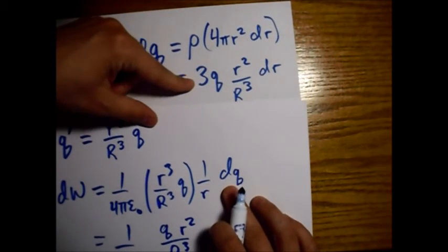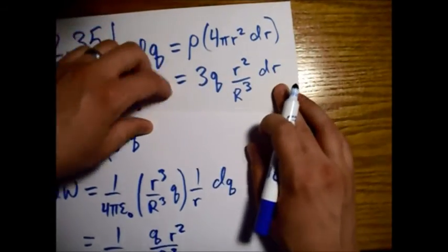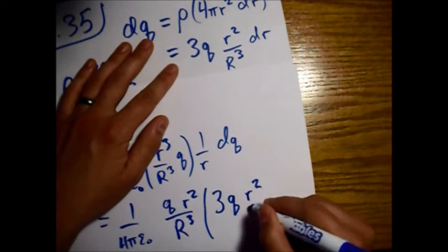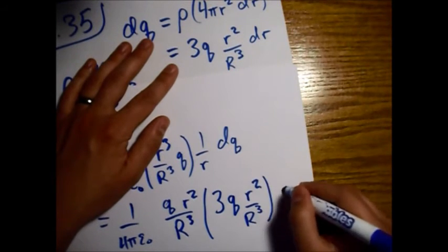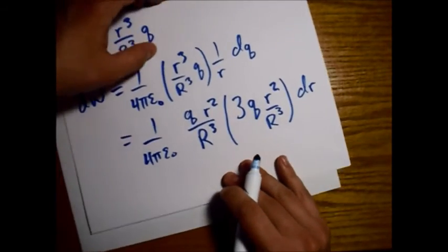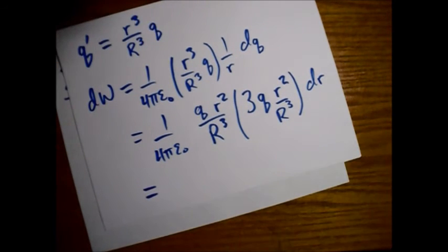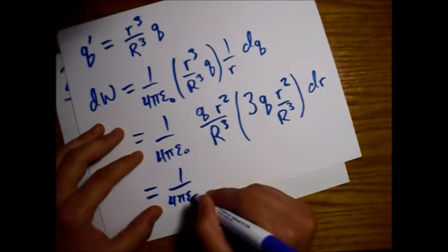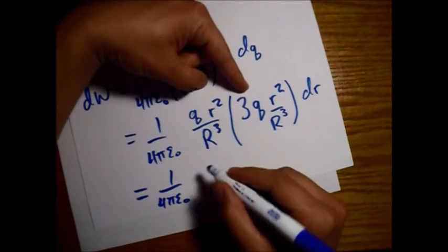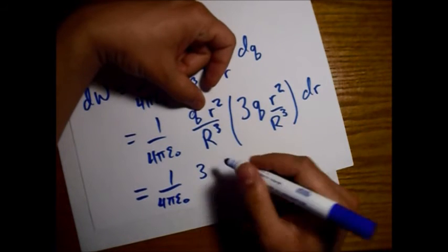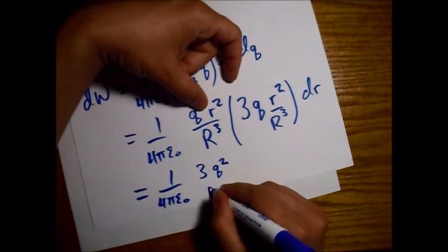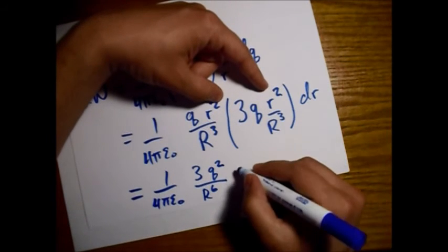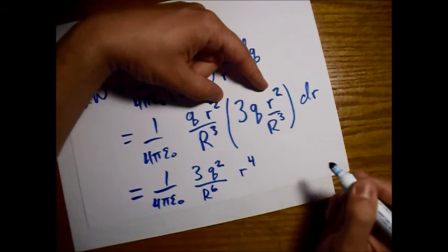Now let's plug in for dQ, which is what we found right up here. We'll have a 3 Q little r squared over big R cubed dr. Let's get this into the final form before integration, gather everything together. I'll leave the 1 over 4 pi epsilon naught out front. We have a 3, we have Q squared, we have R - a big R to the sixth on the bottom. Now we just need the little r's - that's a little r to the fourth power dr.